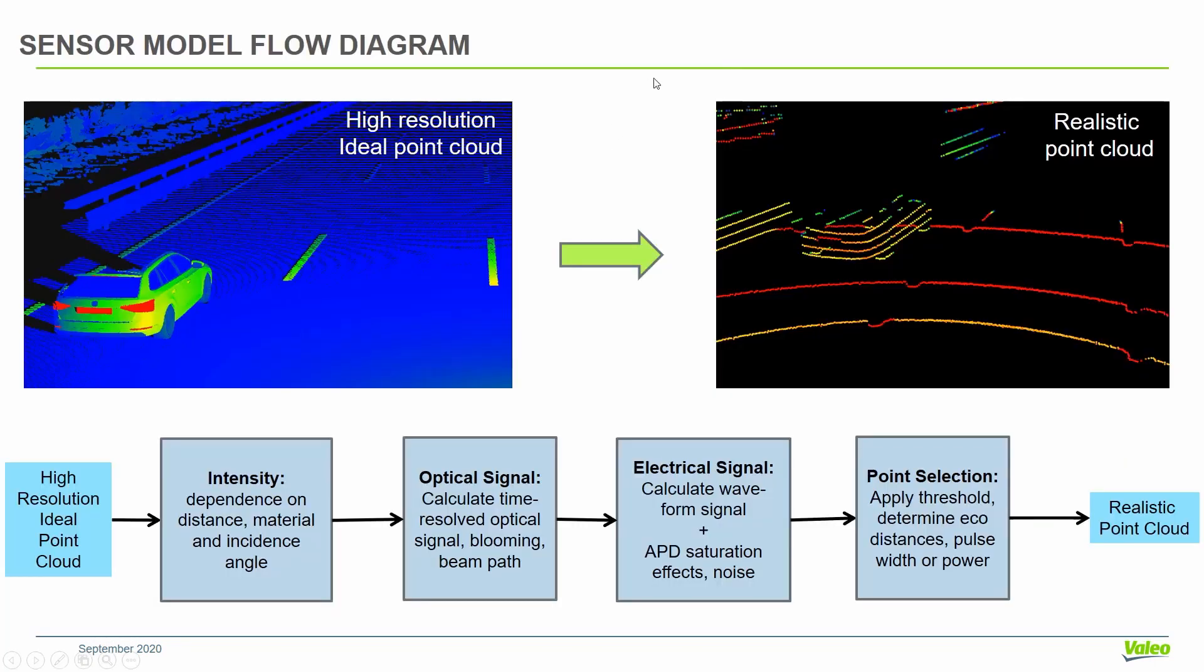Here you can see the flow diagram of such a sensor model. It starts with this ideal point cloud with very high resolution where we only have the intensity for each point. Then we calculate the optical time-resolved signal, generate the electrical signal, generate effects like blooming and beam paths. From this we calculate the time-resolved waveform signal, the electrical signal. We calculate effects like saturation and noise. Then using this signal we apply a threshold and calculate the distance, pathways or power of these peaks. This should result in a realistic detailed point cloud.